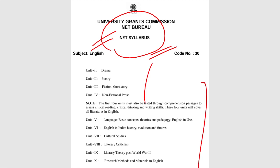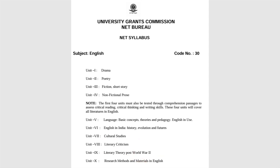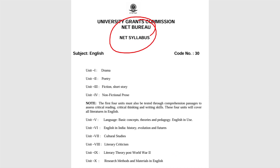For those who are not aware of the UGC NET English Literature syllabus, this is the syllabus — it is also available on the UGC NET website. The syllabus covers: drama, poetry, fiction, short story, non-fictional prose, and additional components such as language, basic concepts, theories and pedagogy, English in use, English in India — its history, evolution, and future — cultural studies, literary criticism, literary theory post-World War II, and research methods and materials in English. As you can see, the syllabus covers the entire length and breadth of English literature.